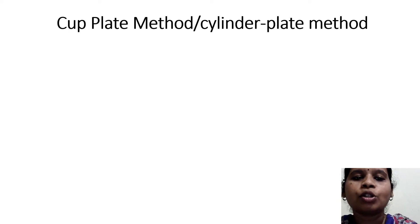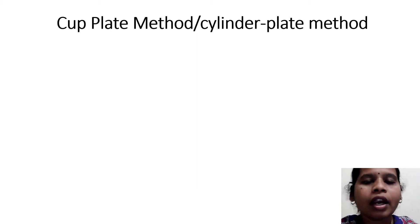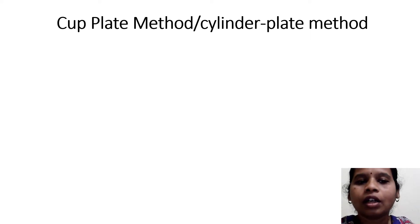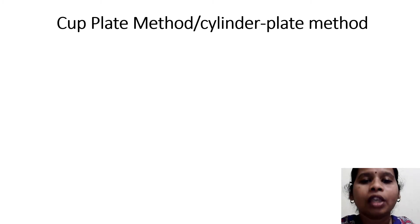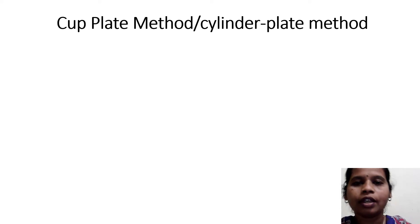This method depends upon the diffusion of an antibiotic into the culture medium. The antibiotic which has an effect against that microorganism will inhibit the growth of the microorganism in a circular area, which will be known as the zone of inhibition.